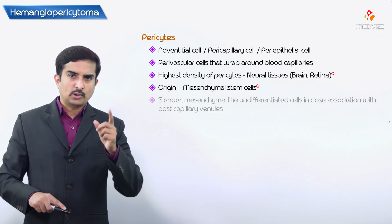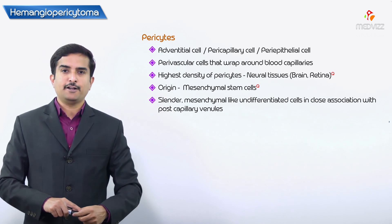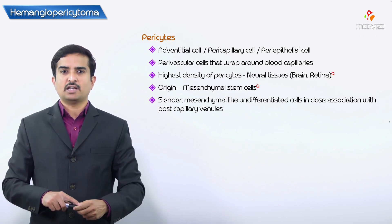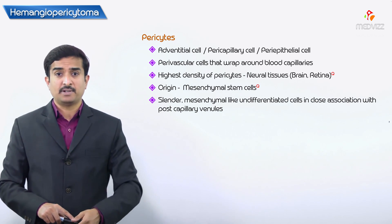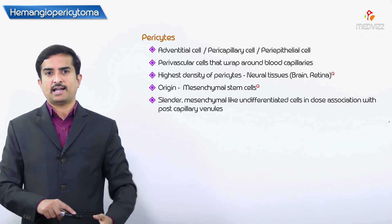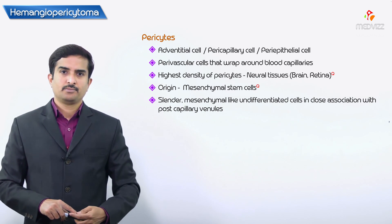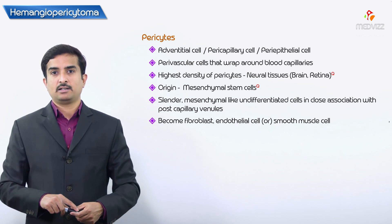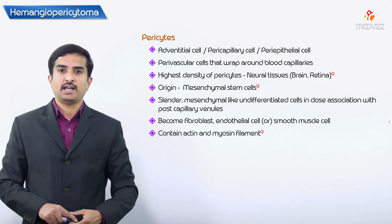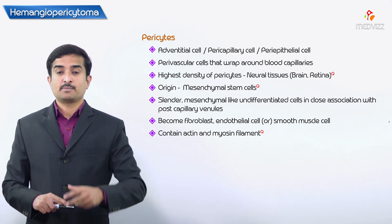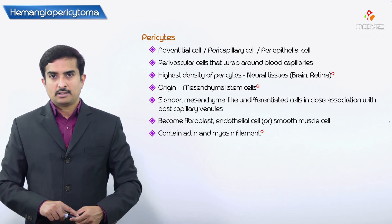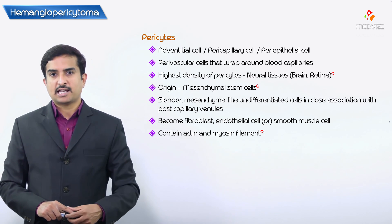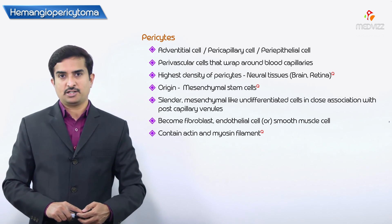These pericytes are slender, mesenchymal-like undifferentiated cells found in close association with the outside wall of the post-capillary venules. They may become fibroblasts, endothelial cells, or smooth muscle cells, and especially contain actin as well as myosin filaments. This is how we can describe pericytoma, or hemangiopericytoma.